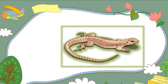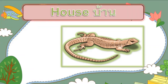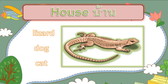Lizard — what habitat does a lizard belong to? House. What are the other animals that live in the house? We have lizard, dog, and cat. Their habitat is house.